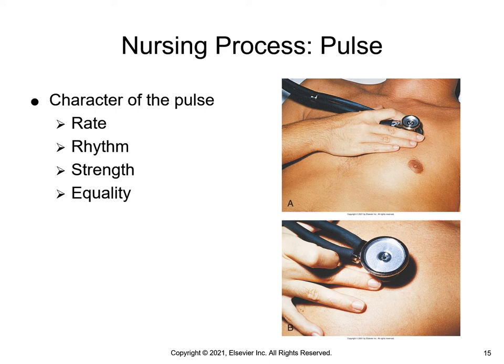A normal rhythm has a regular interval between each pulse or heartbeat. For strength, the nurse documents pulse strength as: bounding (4+), full or strong (3+), normal and expected (2+), diminished or barely palpable (1+), or absent (0). For equality, the nurse assesses radial pulses on both sides of the peripheral vascular system simultaneously, comparing characteristics of each, as pulses in both arms or both legs should be very similarly the same.